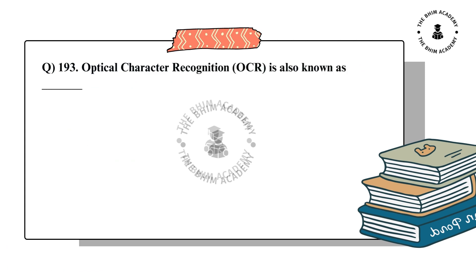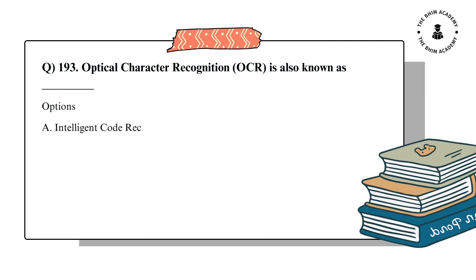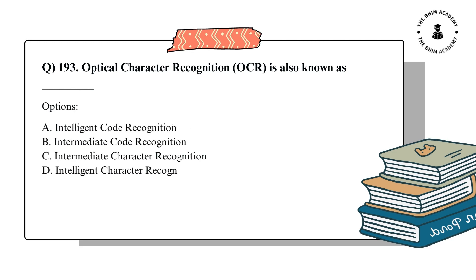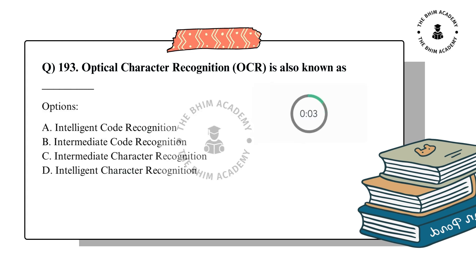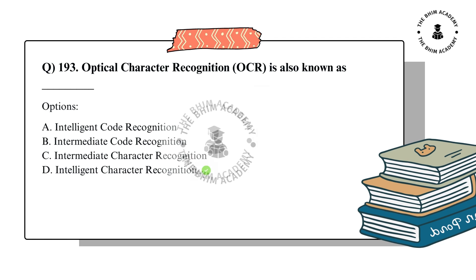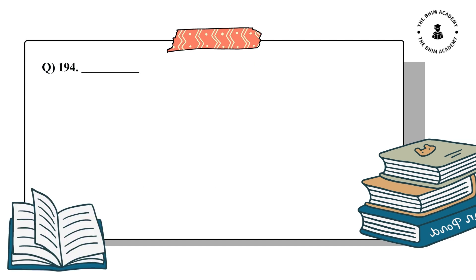Question number 193. Optical character recognition, OCR, is also known as Dash. The options are: A. Intelligent code recognition, B. Intermediate code recognition, C. Intermediate character recognition, D. Intelligent character recognition. The correct answer is D. Intelligent character recognition.